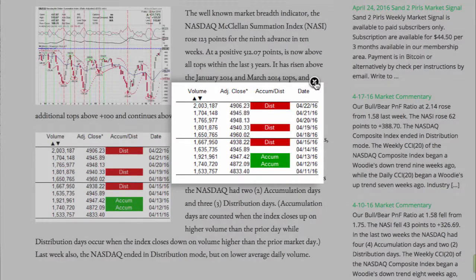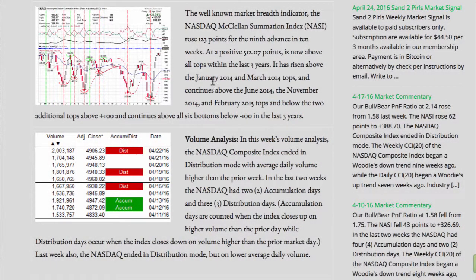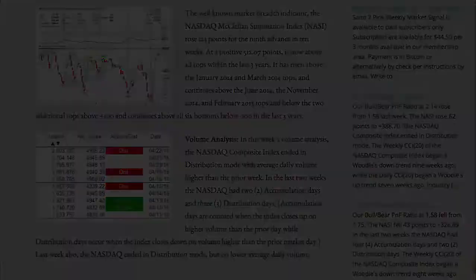Volume Analysis. In this week's volume analysis, the NASDAQ composite index ended in distribution mode, with average daily volume higher than the prior week. In the last two weeks, the NASDAQ had two accumulation days and three distribution days. Accumulation days are counted when the index closes up on higher volume than the prior market day, while distribution days occur when the index closes down on volume higher than the prior market day. Last week also, the NASDAQ ended in distribution mode, but on lower average daily volume.